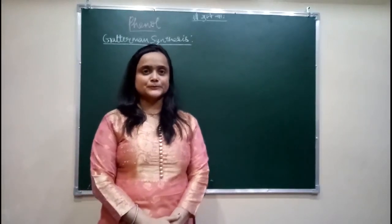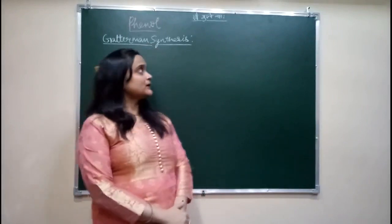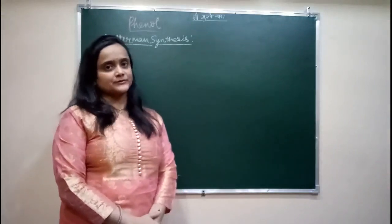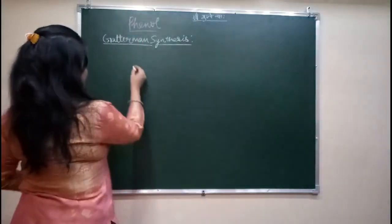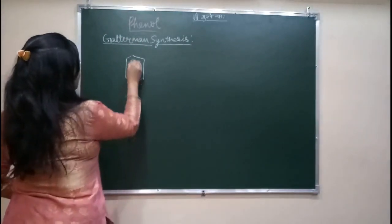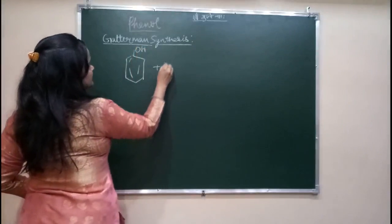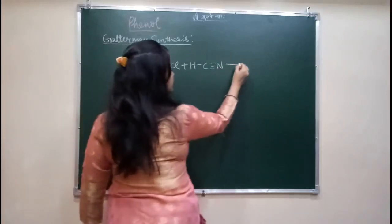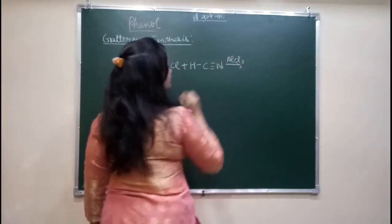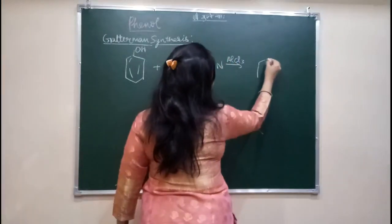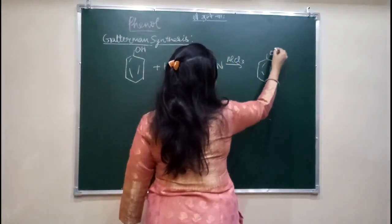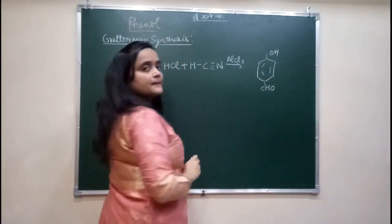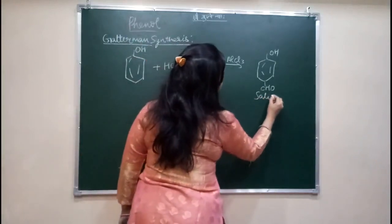Hello students, myself Dr. Shilpi Gupta. Welcome to the class of chemistry. We are running with the topic of phenol, and today I'm going to start with Gattermann synthesis reaction and its mechanism. So what is Gattermann synthesis? When phenol is treated with HCN and hydrogen cyanide in presence of dry anhydrous aluminium chloride, what we get is salicylaldehyde — the CHO group comes to the para position.